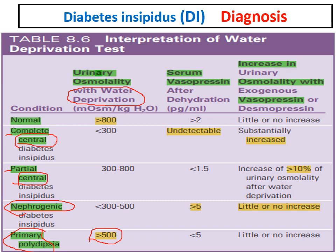The next step is to measure serum vasopressin level to differentiate central from nephrogenic DI. In nephrogenic DI, vasopressin secretion is adequate, so the level will be more than 5 pg/mL. In central DI it will be low — undetectable in complete central DI, or less than 1.5 pg/mL in partial central DI.